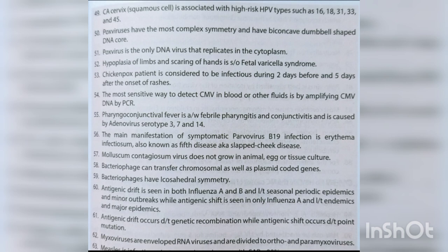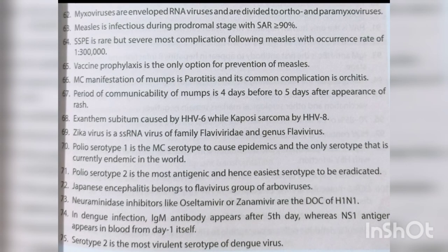Myxoviruses are enveloped RNA viruses divided into ortho- and paramyxoviruses. Measles is infectious during the prodromal stage with a SAR greater than 90. SSPE is a rare but severe complication following measles with an occurrence rate of 1 per 1-3 lakh cases; vaccine prophylaxis is the only option for prevention. Most common manifestation of mumps is parotitis and its most common complication is orchitis; communicability is 4 days before to 5 days after appearance of rash. Exanthem subitum is caused by HHV-6 while Kaposi's sarcoma is caused by HHV-8.